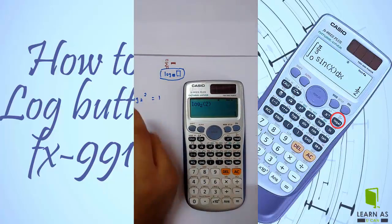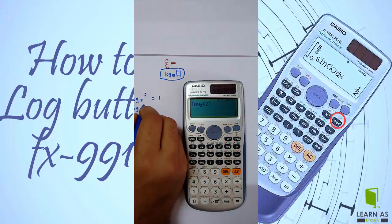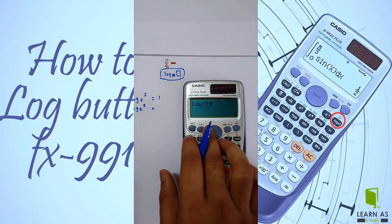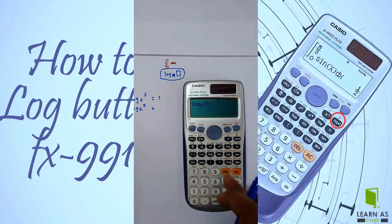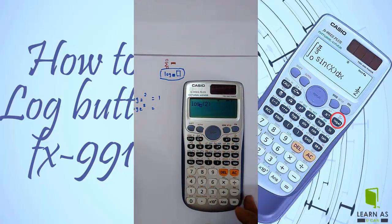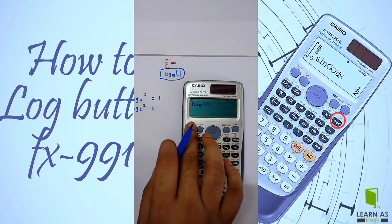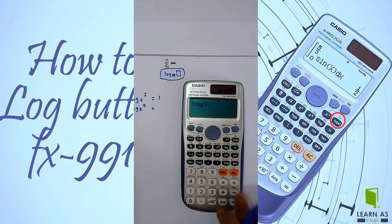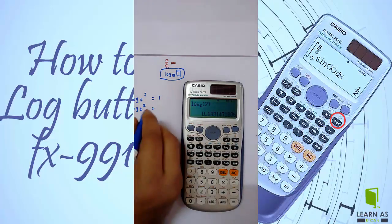Next example is log of e. You can see, I am just replacing here. Delete, Shift, Alpha, then key. You can see, result is 1.69.